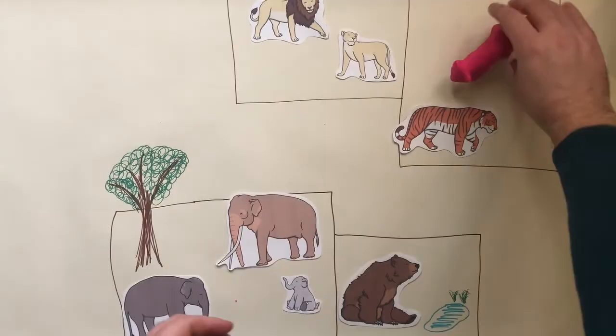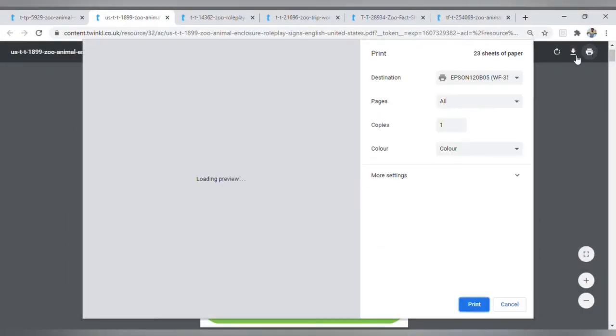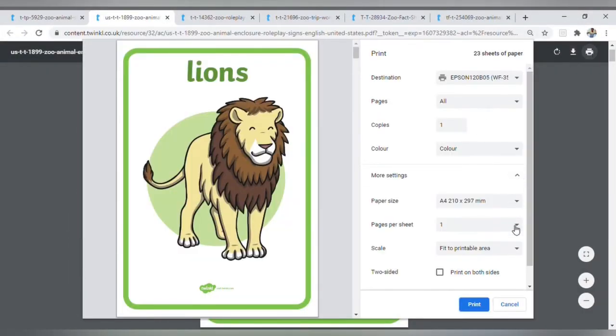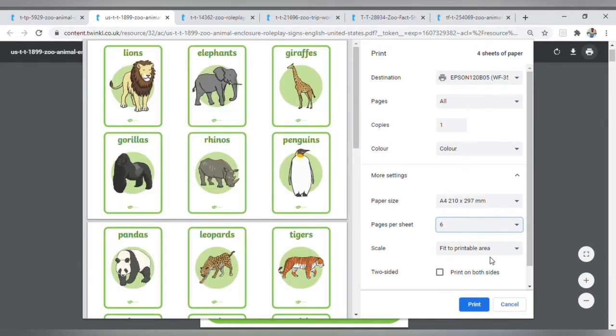We have other great resources like these animal posters, which make great flashcards if you increase the number of pages per sheet to six—I find this works quite well.